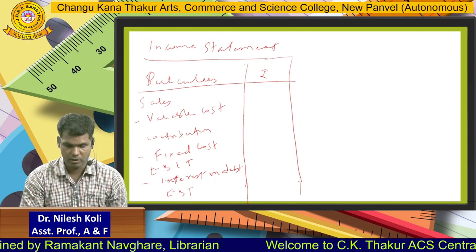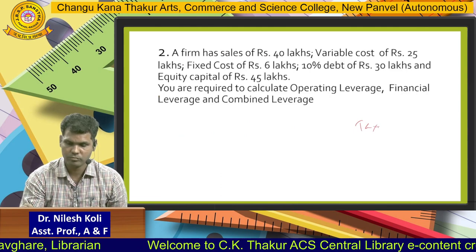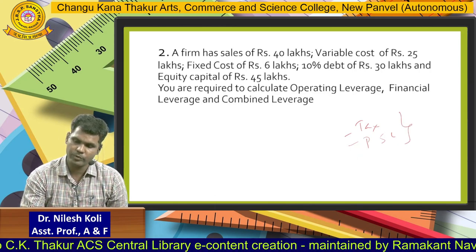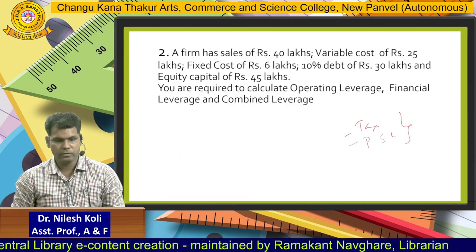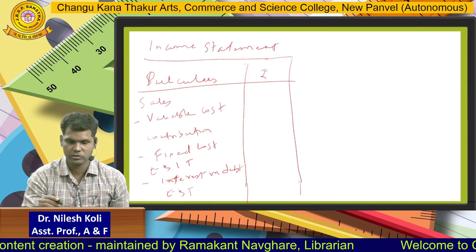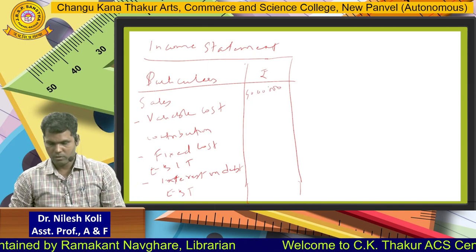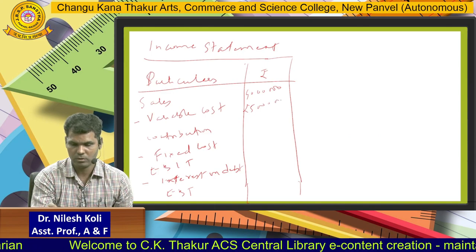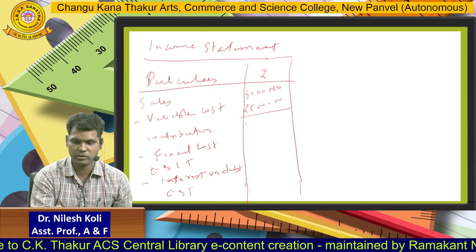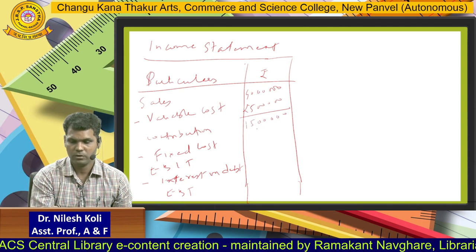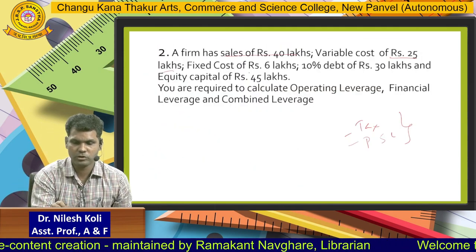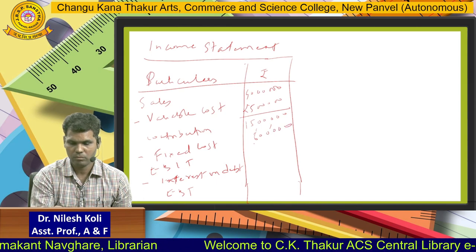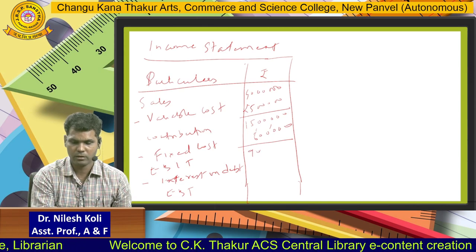Further there are preference dividends and tax, but in this problem they have not given information about tax or preference share capital. So as this information has not been given, we cannot go ahead with those. Sales is 40 lakhs. Variable cost is 25 lakhs. So Contribution = Sales minus Variable Cost = 40 lakhs minus 25 lakhs = 15 lakhs. Fixed cost is 6 lakhs.